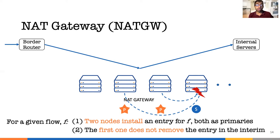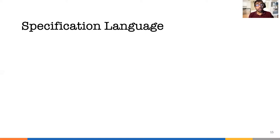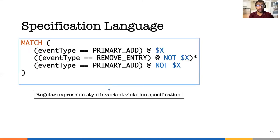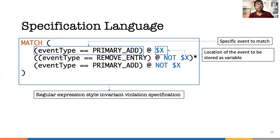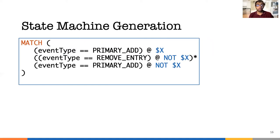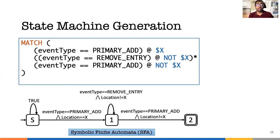If either of them does not hold, there is no violation. Aragog provides a simple language to specify invariant violations. We write the sequence of events in regular expression style. Each event contains the fields to match and the location. We write the location as a variable so the matching is not tied to a specific location. Once we have the event sequence to match, we create symbolic finite automata from it. The transitions are given by a Boolean algebra, and include transitions with variables and timings. The SFA is strictly more expressive than traditional finite automata.